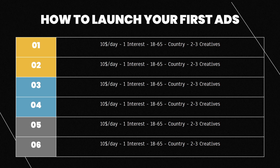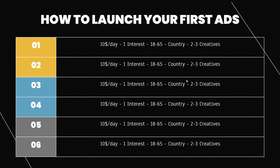In a test campaign, you want to have two to three creatives — maybe two video ads and one photo. If you only have $10 a day, you don't want to spread it too thin, so two to three creatives gives you some breathing room. In total, you're going to have seven interests at $10 a day each, which means $70 total daily spend and seven interests.